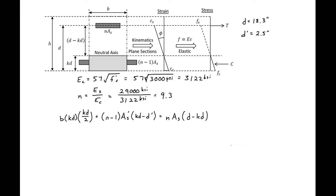To find kd, we sum the areas above the neutral axis times their distance from the neutral axis to the centroid, and set that equal to the areas below times their distance. We have three areas: area 1 is the uncracked concrete above; area 2 is the transformed compression steel; and area 3 below is the transformed tension steel.